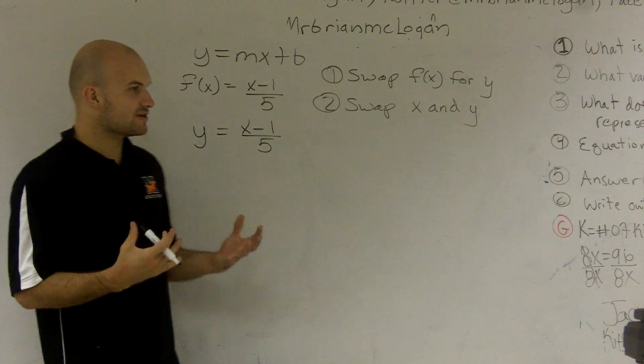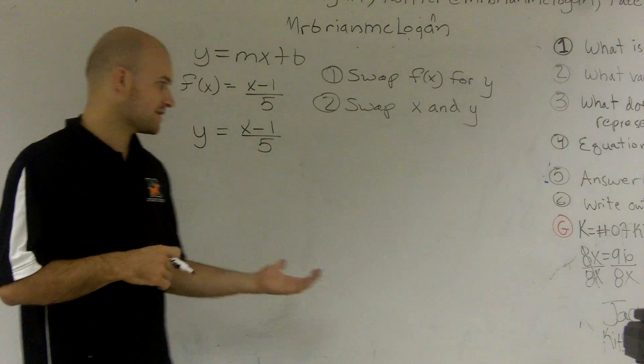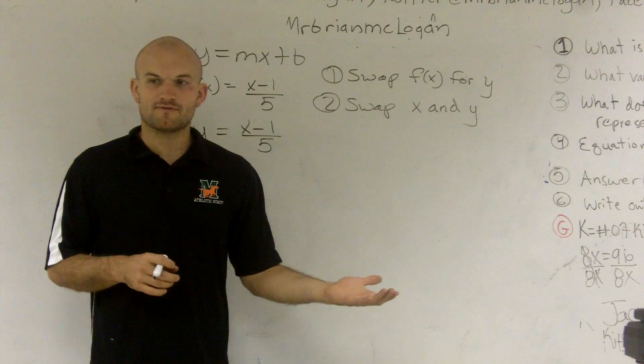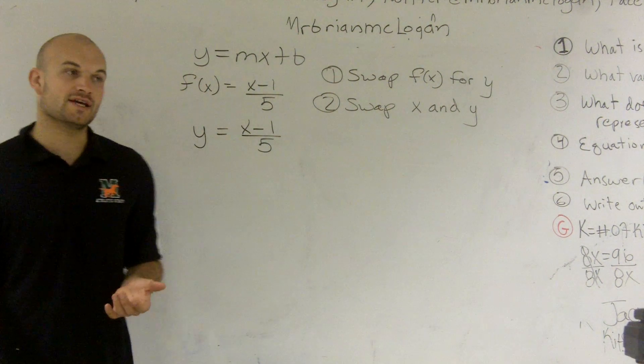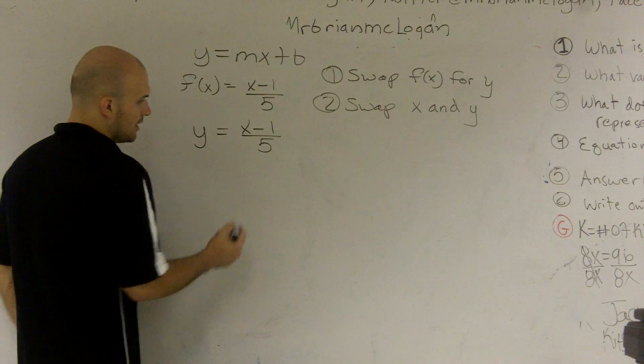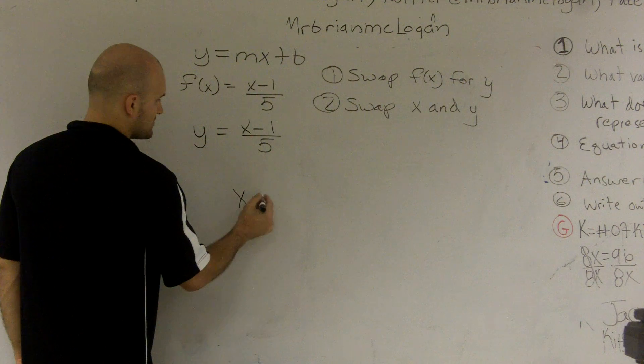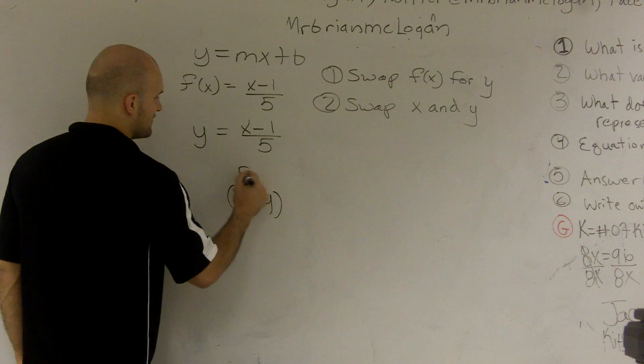Because if you remember, when we talk about inverses, the domain, if I was looking at a function, the domain of one function is the range of the inverse function. So what happens is, you know, coordinate points, it's like you're swapping your x and your y. So if I was going to say, like, here's my one function, here's f(x).